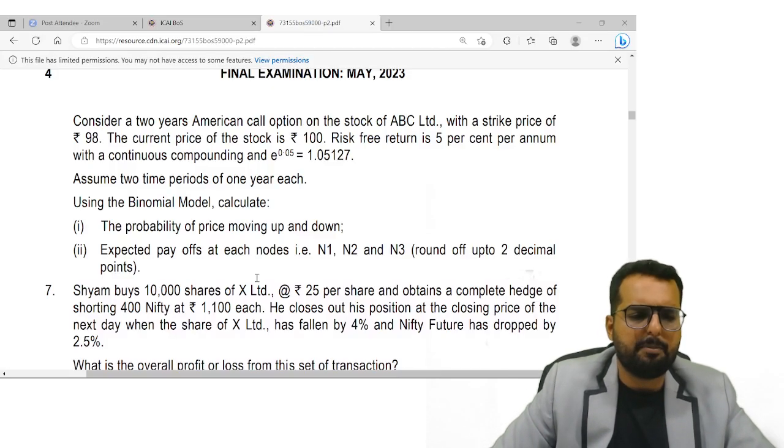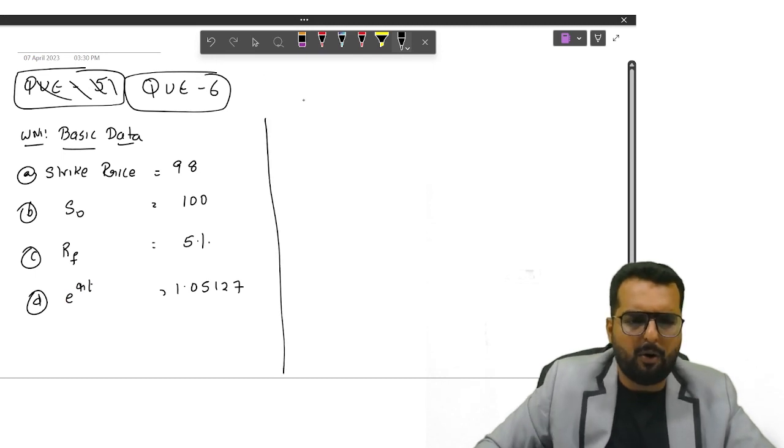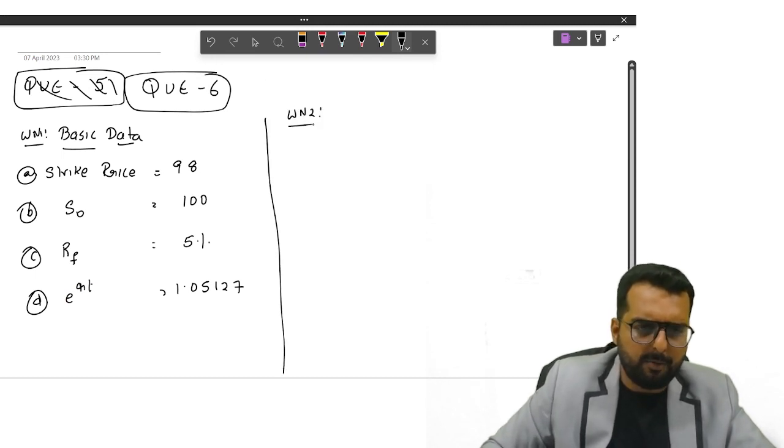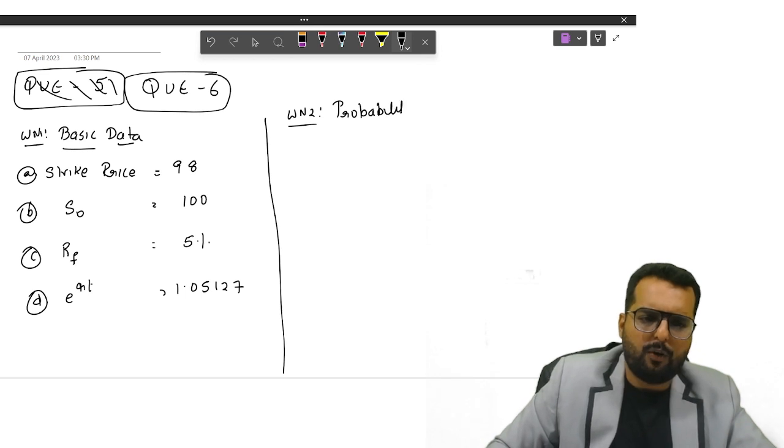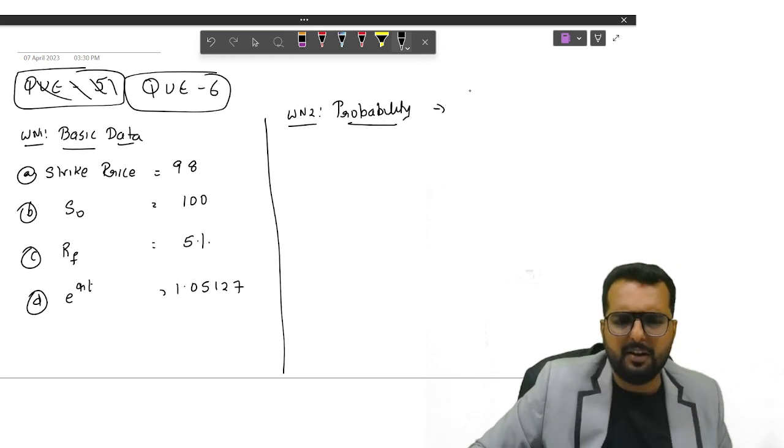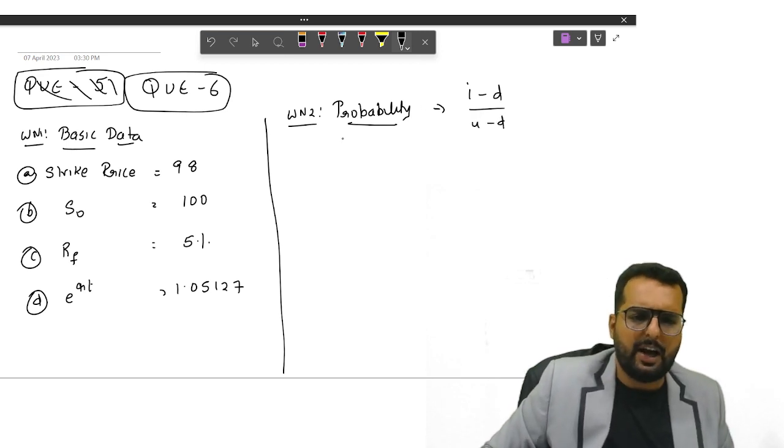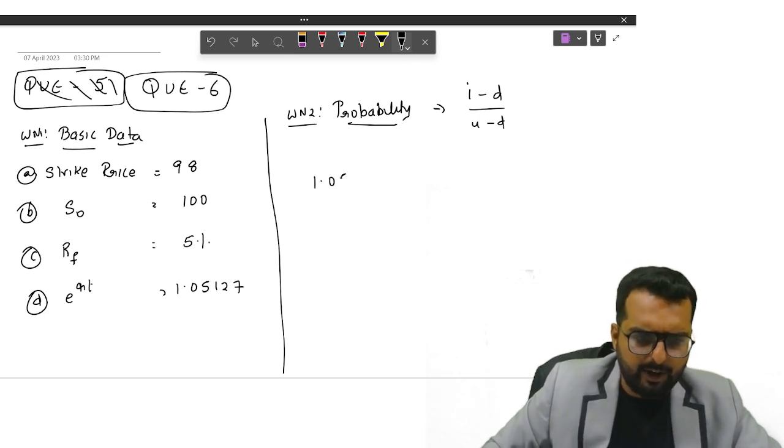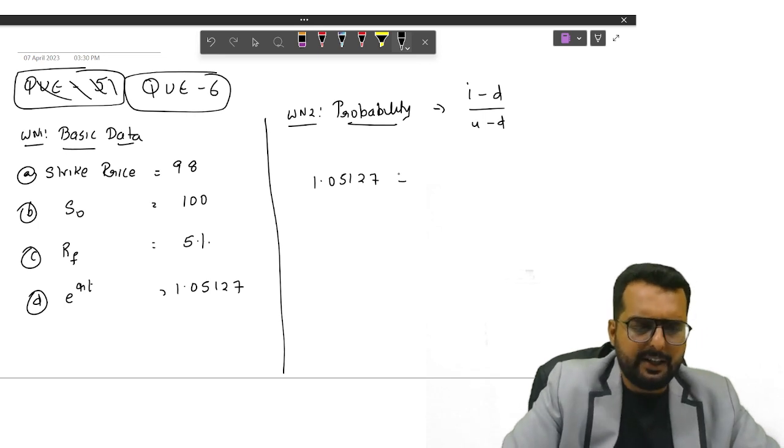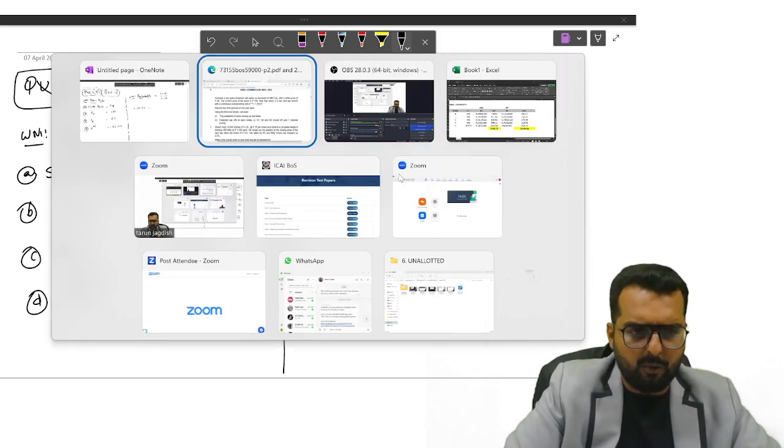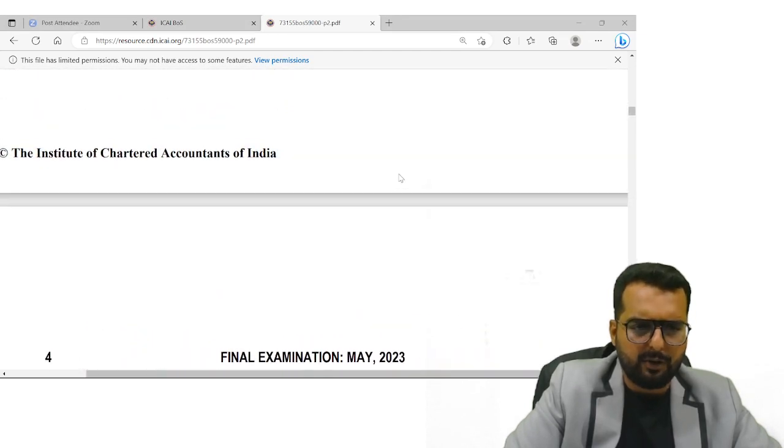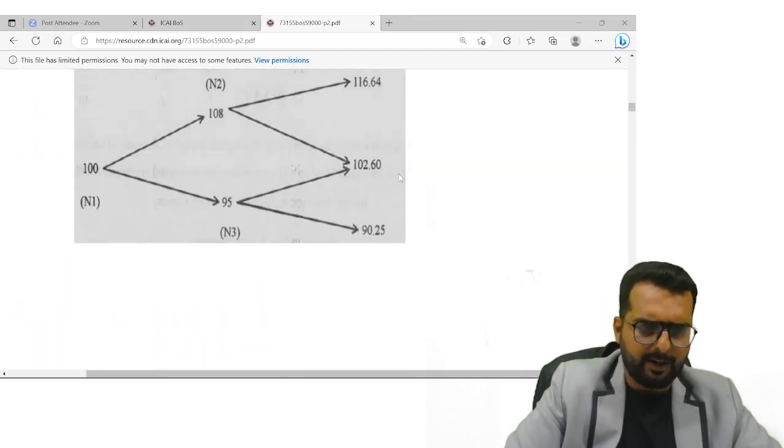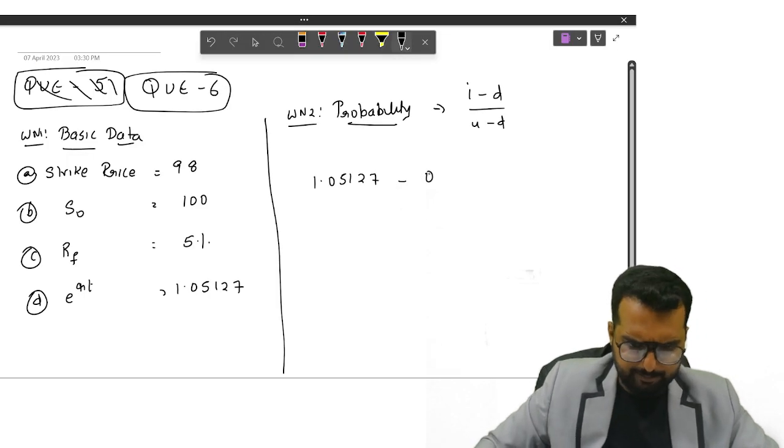They want you to find out the probability. Friends in binomial model, how do you find out the probability? I am not going into the logic of all these things, I have not taught this in detail in my classes. It is I minus D divided by U minus D. Okay, IDUD, that is a short form. So how do we take? I is the interest rate, it will be 1.05127, minus D would be the price that is falling down compared to the spot price. So here the price that is falling down is 95 by 100, am I right? How much is 95 by 100? 0.95. Alright.